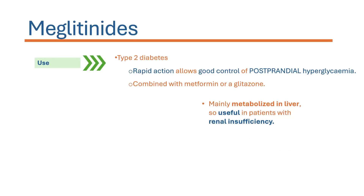Meglitinides are used in the treatment of type 2 diabetes mellitus. Their rapid onset of action allows for good control of postprandial hyperglycemia. They are usually used in combination with metformin or glitazones. Since they are metabolized in the liver, meglitinides are preferred in patients with renal insufficiency.